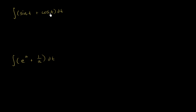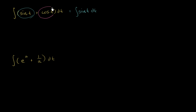So what's the antiderivative of this expression? It's going to be the antiderivative of sine of t plus the antiderivative of cosine of t — that is, the indefinite integral of sine of t plus the indefinite integral of cosine of t. So let's think about what these antiderivatives are.